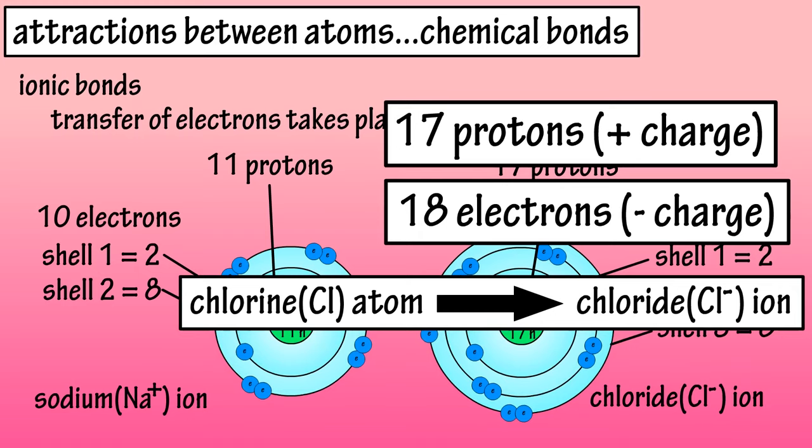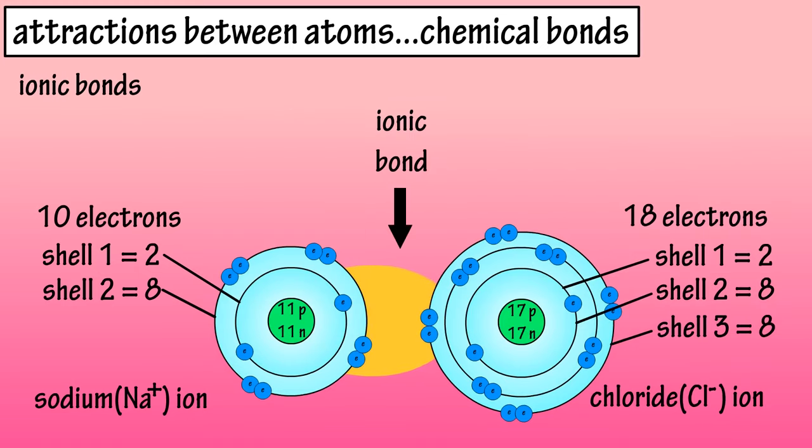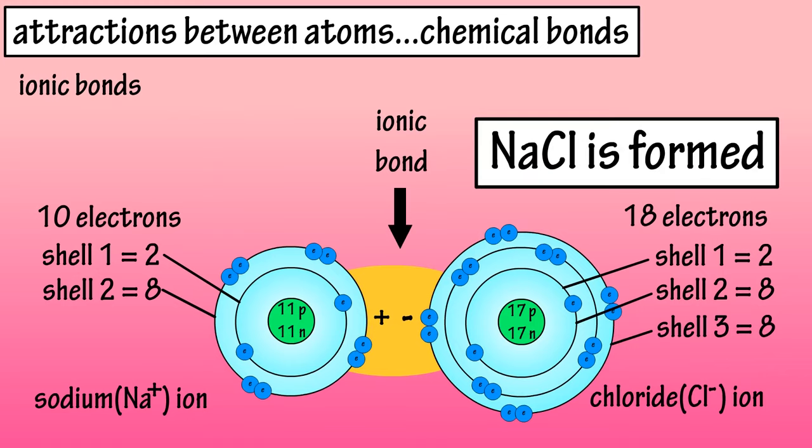The positively charged sodium ion is now attracted to the negatively charged chloride ion, and NaCl, or table salt, is formed. This is an ionic bond.